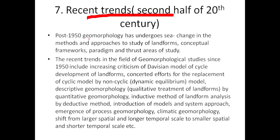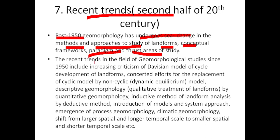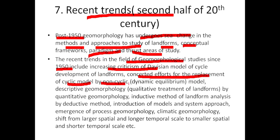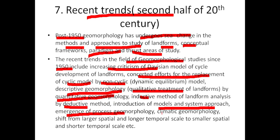In recent times — the second half of the 20th century, post-1950 — geomorphology has undergone sea changes in methods and approach to the study of landforms, conceptual framework, paradigm, and thrust areas of study. Recent trends in geomorphological studies since 1950 include: increasing criticism of Davis's model; concerted efforts for replacement of the cyclic model by non-cyclic models; replacement of descriptive and qualitative treatment by quantitative geomorphology; replacement of inductive methods by deductive methods; introduction of models and systems approach; emergence of process geomorphology and climatic geomorphology; and a shift from larger spatial and longer temporal scales to smaller spatial and shorter temporal scales.